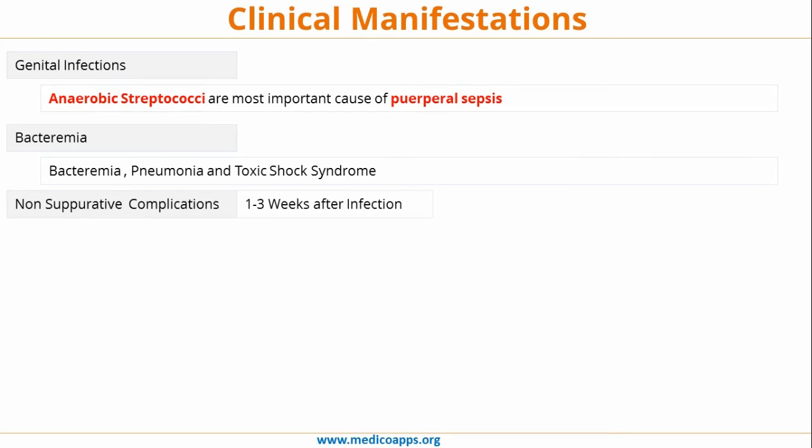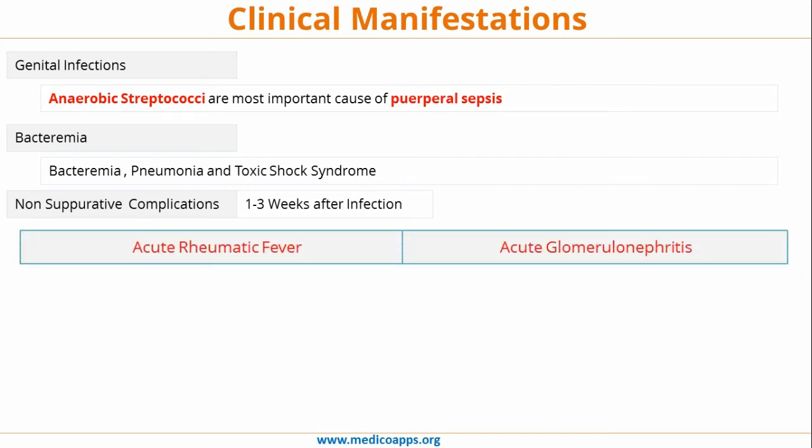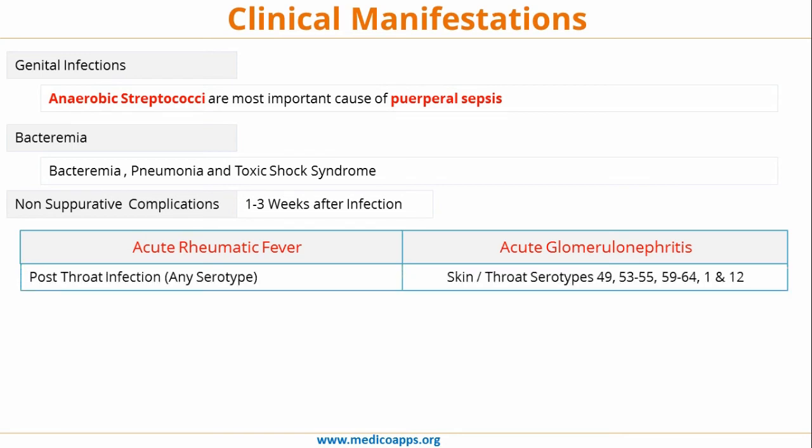Genital infections: anaerobic streptococci are the most important cause of puerperal sepsis, bacteremia, pneumonia, and toxic shock syndrome. Finally, two non-suppurative complications generally happen one to three weeks after infection: acute rheumatic fever and acute glomerulonephritis. Acute rheumatic fever is seen post-throat infection of any serotype, whereas acute glomerulonephritis is seen with specific serotypes 1, 12, 49, 53 to 55, and 59 to 64.